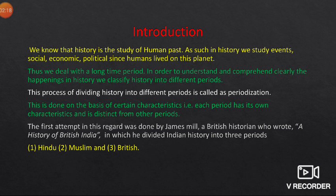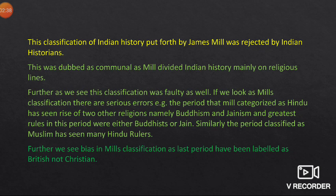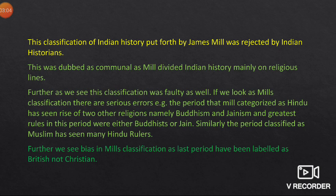With respect to Indian history, the first attempt in this regard was done by James Mill, a British historian, who in his book 'A History of British India' for the first time divided Indian history into three periods. The first period he called the Hindu period, the second he called the Muslim period, and the third he called the British period. This classification put forth by James Mill was rejected by Indian historians mainly on the following grounds.